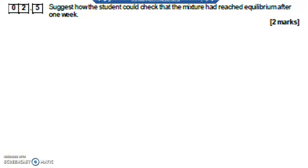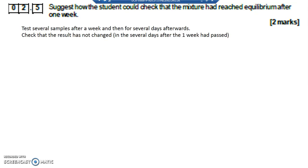Question 2.5: explain how the student could check the mixture to reach equilibrium after one week. You take some samples and then take further samples in the forthcoming days to see if the concentrations of the reactants and products have changed. If they haven't, then you'd know that it reached equilibrium.